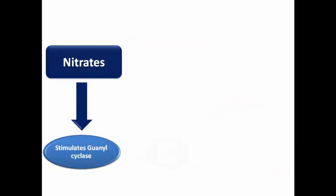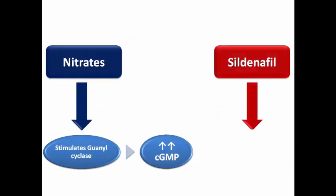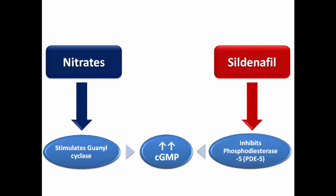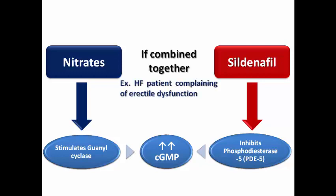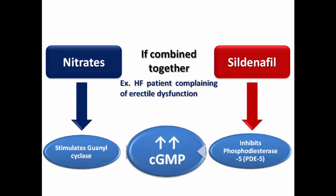The problem is that nitrates stimulate guanylate cyclase, increasing cyclic GMP, while sildenafil inhibits phosphodiesterase, which breaks down cyclic GMP — so it also increases cyclic GMP. If they are combined, for example in a heart failure patient also suffering from erectile dysfunction who takes nitrates for paroxysmal nocturnal dyspnea or chest pain and takes sildenafil on demand, this results in a significant increase in cyclic GMP.